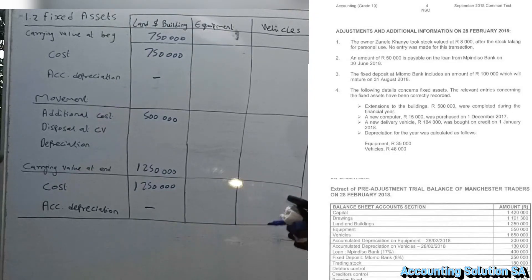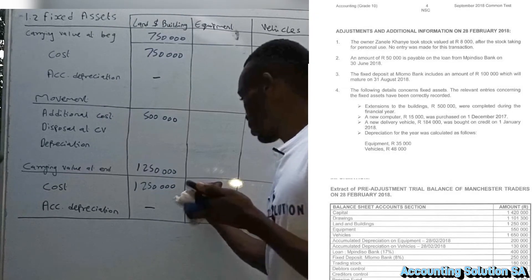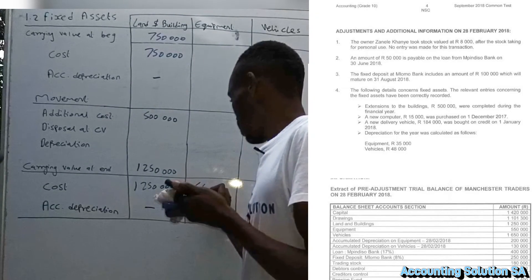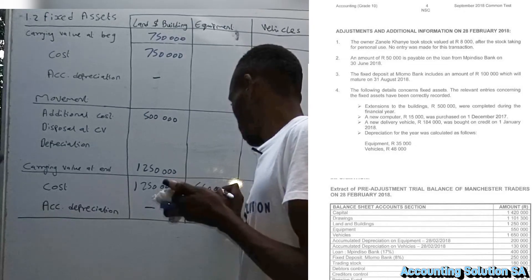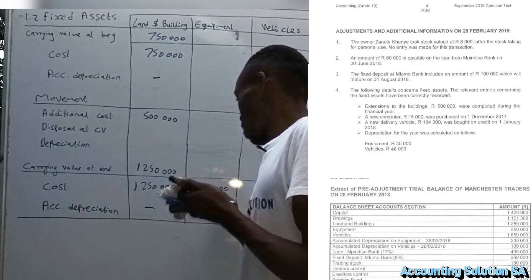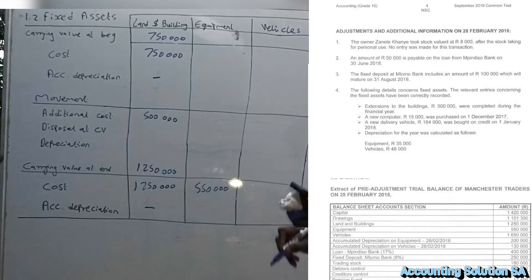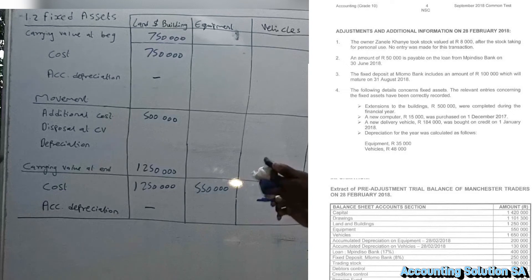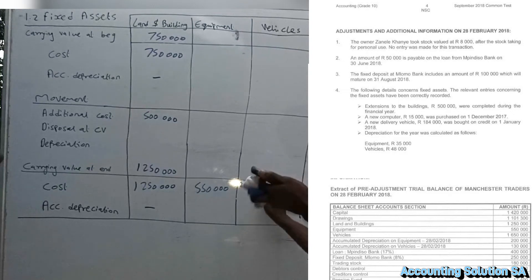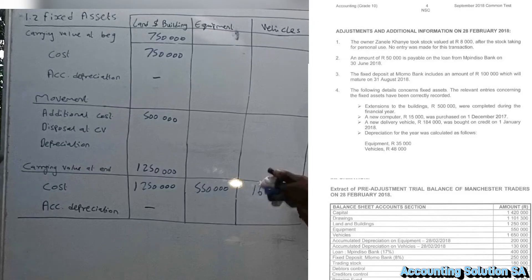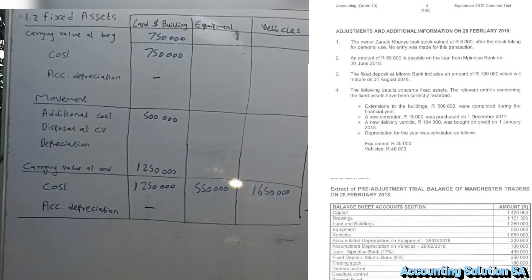Now let's check the cost price of equipment — we were given 550 000, but the accumulated depreciation we need to calculate. For vehicles, the cost price given is 1 650 000.